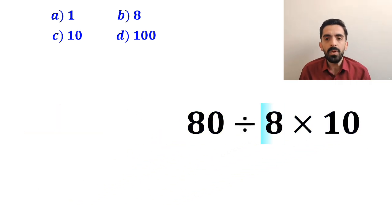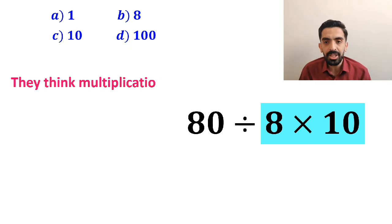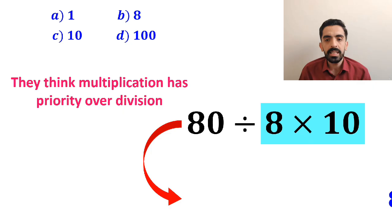In the next step, they go for the multiplication between 8 and 10 because they think multiplication has priority over division. So this expression simplifies to 80 divided by 80, which finally gives them the answer 1.